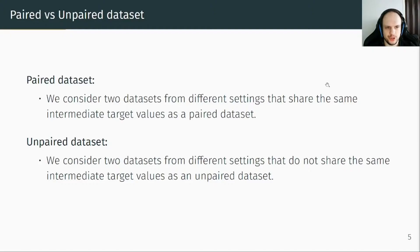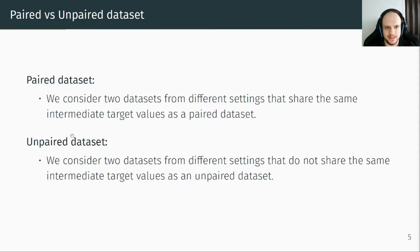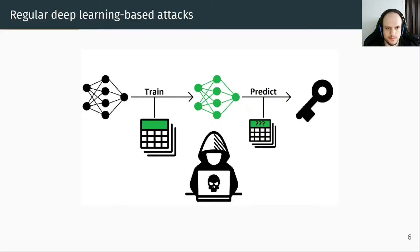Let us introduce a notion from artificial intelligence. In the case we have two datasets coming from different settings, either the two datasets share the same intermediate target value — in which case they are called paired datasets — or they do not share the same intermediate target value, in which case they are called unpaired datasets. We need paired datasets to apply the technique we present. The regular approach consists in using two datasets: a profiling set and an attack set.